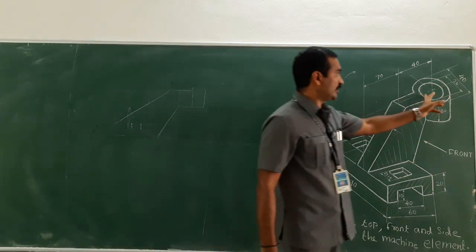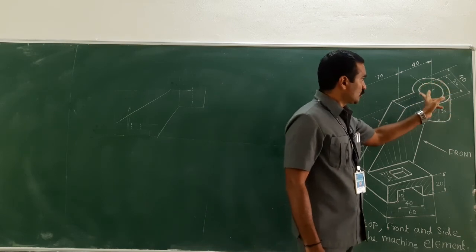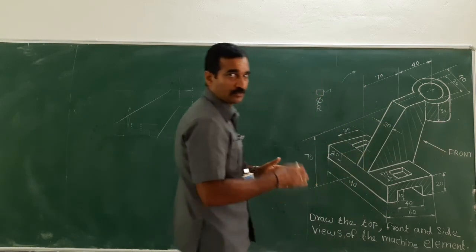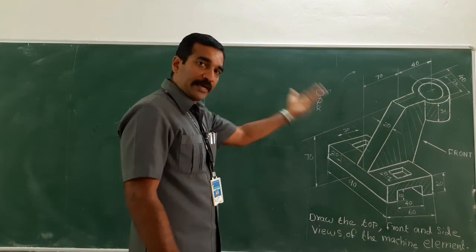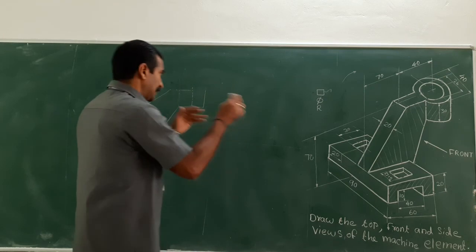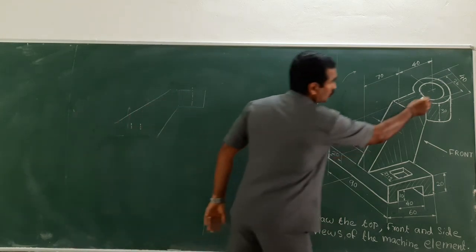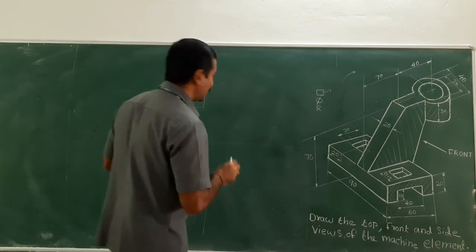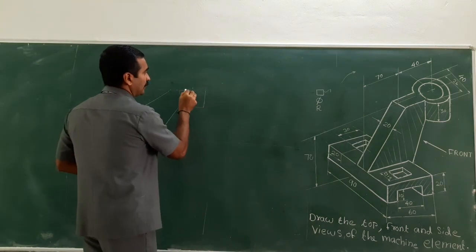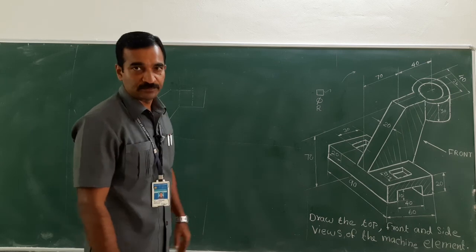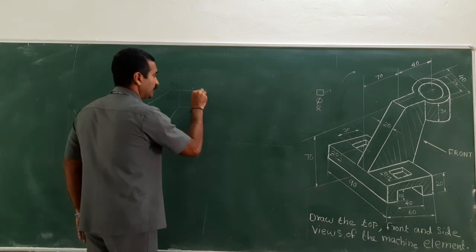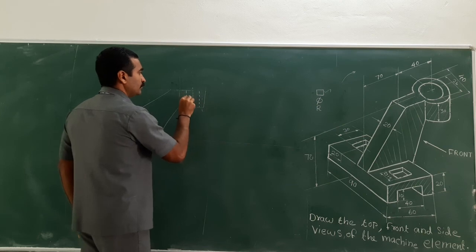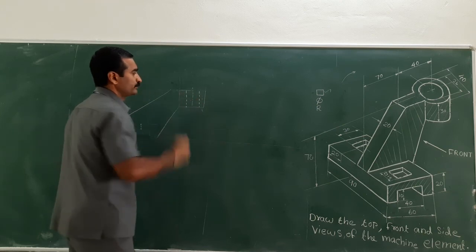Look at this extended portion — there is one circle within the cylinder which I cannot see, so that would be an invisible hidden feature. The size of this hole is diameter 26. Therefore 13 in the right-hand direction and 13 in the left-hand side direction. Draw the dotted line.